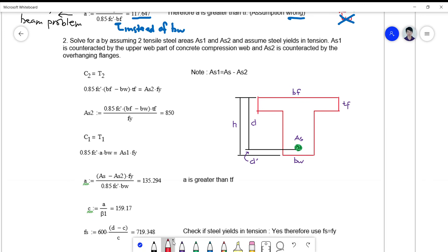Which has two compression areas of concrete divided as shown. So this is now your neutral axis. So our first area will actually be the depth of the stress block A multiplied by the width BW, while the other area is given by this overhanging flanges.